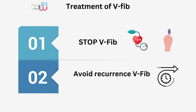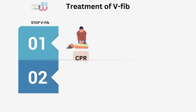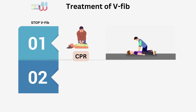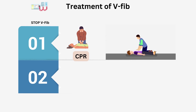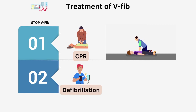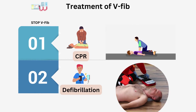First, cardiopulmonary resuscitation or CPR — conventional CPR uses chest compressions and mouth-to-mouth breathing at a ratio of 30 to 2 compressions to breaths. In adult victims of cardiac arrest, it is reasonable for rescuers to perform chest compressions at a rate of 100 to 120 per minute and to a depth of at least 2 inches or 5 centimeters, while avoiding excessive compression depths greater than 2.4 inches or 6 centimeters.